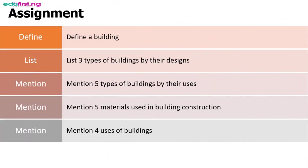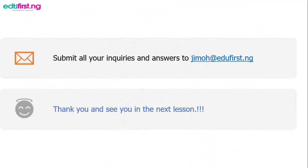One: define a building. Two: list three types of building by their designs. Three: mention five types of building by their uses. Four: mention five materials used in building construction. Five: mention four uses of building. If you have answered these questions, you can simply send the answers to your teacher to mark, or you can send them to us at gmail.eduface.ng. We will be glad to receive feedback from you. Thank you and see you in the next class. Bye.